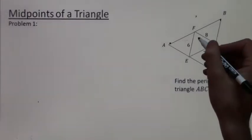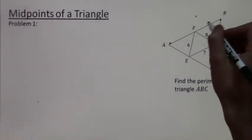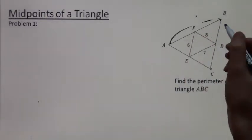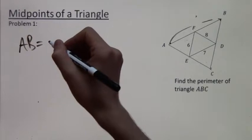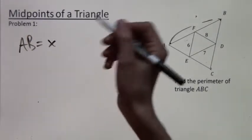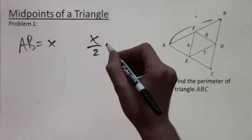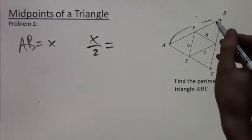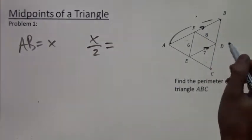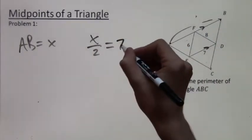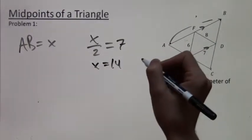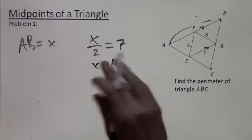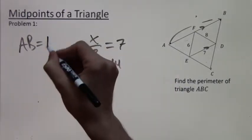So first, let's look at side length AB. Let's see if we can calculate what AB is. So if AB is X, then X over 2 equals, and the midsegment parallel to AB is the one with length 7. So X over 2 is equal to 7. So X equals 14, or in other words, side length AB is equal to 14.